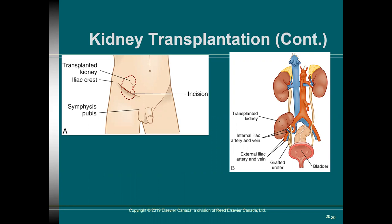Looking at a diagram of renal transplant, we see the surgical incision. We don't typically remove the kidneys that aren't functioning — we just add in that extra, third kidney. We can see the surgical placement of the transplanted kidney sitting within the abdominal cavity, with the old kidneys remaining in their original position.